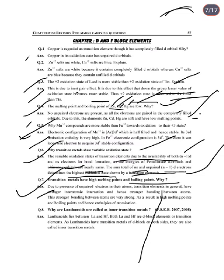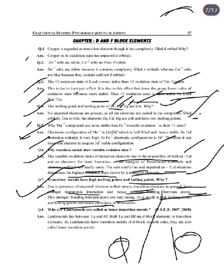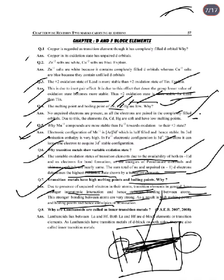Next: Why do transition metals have high melting and boiling points? Due to the presence of unpaired electrons, transition elements generally have stronger inter-atomic interactions and hence stronger bonding between atoms. Transition metals also have a tendency to form strong covalent bonding, resulting in very strong inter-atomic interactions and hence high melting and boiling points.